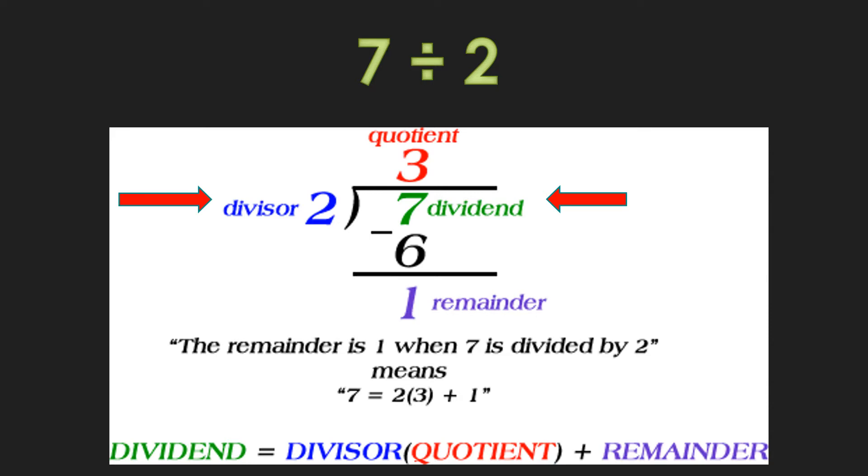Two goes into seven three times. So you then take three, multiply it by two, and you come up with six. That goes right below the number seven. You subtract and you end up with one as your remainder. So your answer is three with the remainder of one.